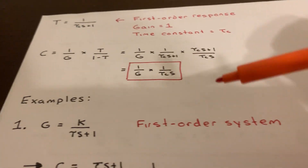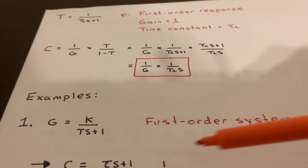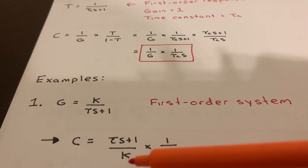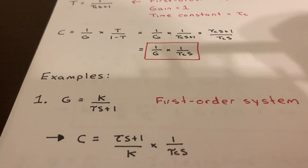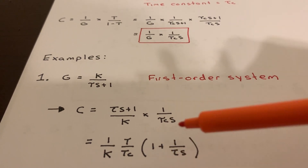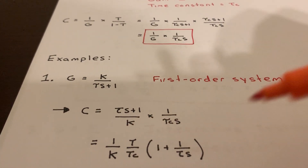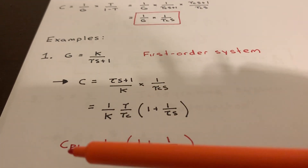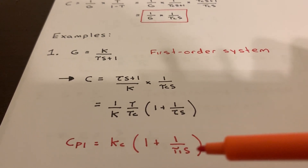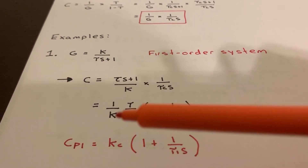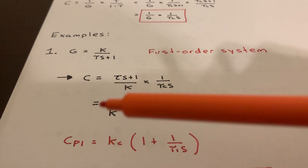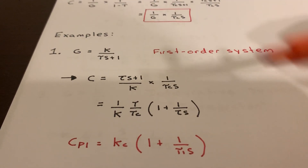Our first example is just a first order system. We have G equals K over τ·S plus one. Using our formula, C equals one over G, so we get τ·S plus one over K, times one over τ_C·S. If I factor this out, I get one over K times τ over τ_C, times one plus one over τ·S. This general form should look familiar because the PI controller has the form K_C times one plus one over τ_I·S. Matching terms, we get that K_C equals one over K times τ over τ_C, and the integral time τ_I equals τ. So the optimal controller for a first order system is a PI controller.